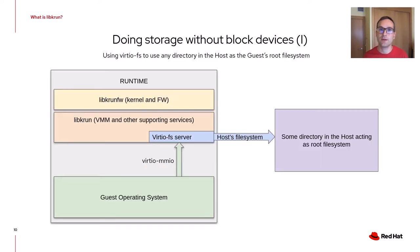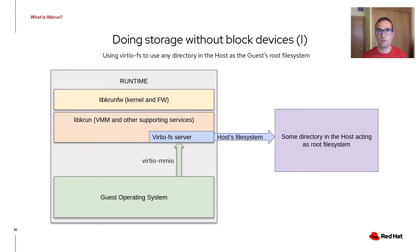Switching to another topic: some of you have probably noticed that when I listed the virtual devices integrated in LibKRUN, there was no support for Virtio block or Virtio SCSI. So how are we doing storage without block devices? We are using VirtioFS to use any directory on the host as the guest root file system. Every time the guest operating system issues a file system request, that request is relayed to the integrated VirtioFS server running in the context of the runtime, which acts on behalf of the guest by accessing a directory on the host file system.